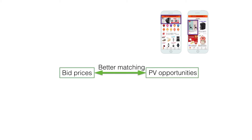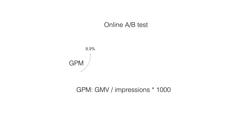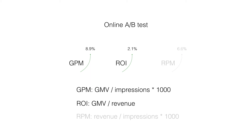With OCPC strategy, advertisers can compete for impression opportunities with more relevant bids under their control. Users can get better experience and the traffic efficiency will be improved, which is a triple win-win situation. Our online A/B test results show that OCPC strategy brings a full range of enhancements, in which the gross merchandise volume per thousand impressions is improved 8.9%, advertisers' return on investment is improved 2.1%, and advertising revenue is improved 6.6%.